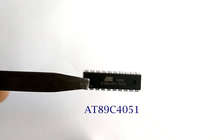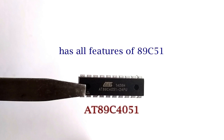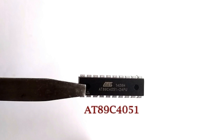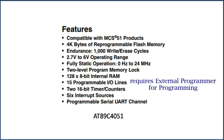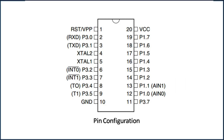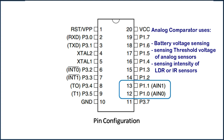Next is Atmel's 89C4051. This is a 20-pin chip, and it has all the features of Atmel's 89C51, with the only difference being that it has 15 input-output lines. This chip also supports a wide operating voltage range from 2.7V to 6V, and also requires an external programmer for programming. Additionally, it contains an inbuilt analog comparator at P1.0 and P1.1, which no other 40-pin chips have.